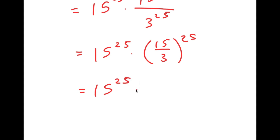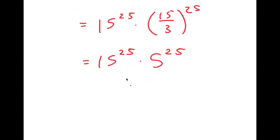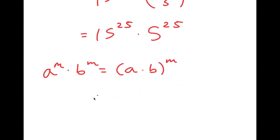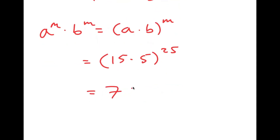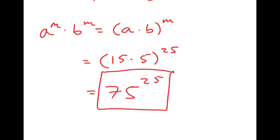This is equal to 15 to the power of 25 times 5 to the power of 25. Now another property of exponents is that a to the power of m times b to the power of m equals a times b to the power of m. So this is going to equal 15 times 5 to the power of 25, which is equal to 75 to the power of 25. So this is my answer.